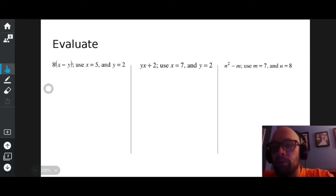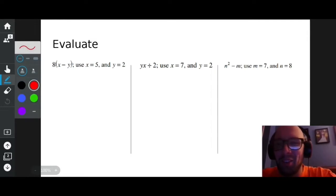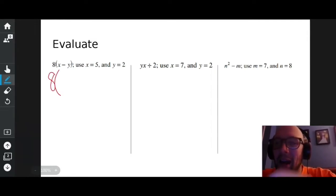I have 8(x - y). What's x? Oh, x is five. So instead of x, put five. Five minus y. Well, instead of y, put two.